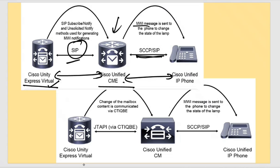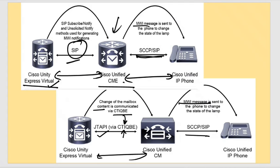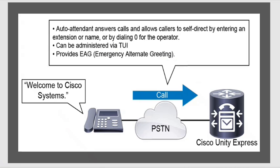From Unity Express to CUCM, the protocol used is JTAPI, or alternatively CTI — Computer Telephony Integration. Changes in voicemail content are communicated via CTI. MWI indicator messages are sent via SCCP or SIP.